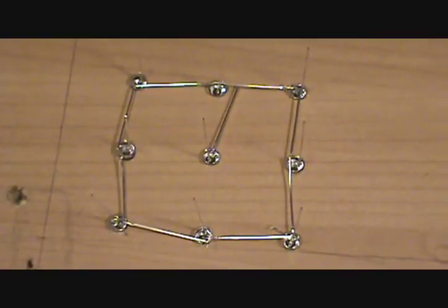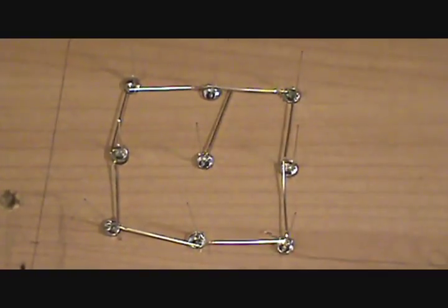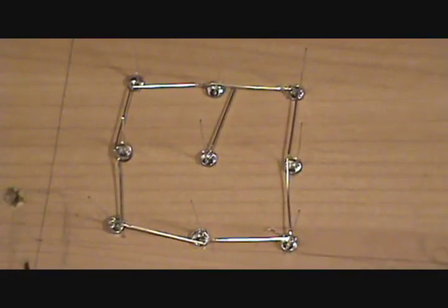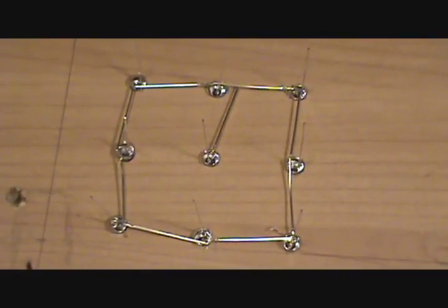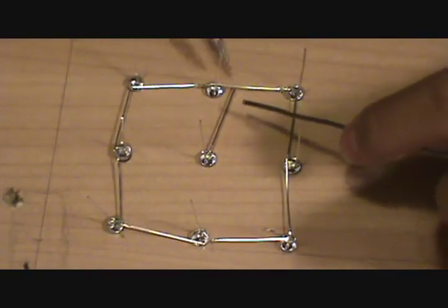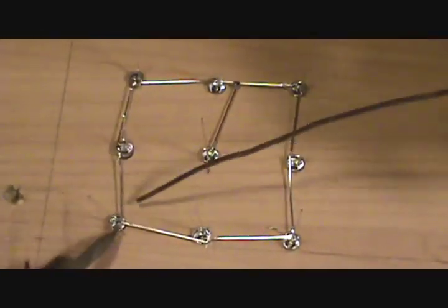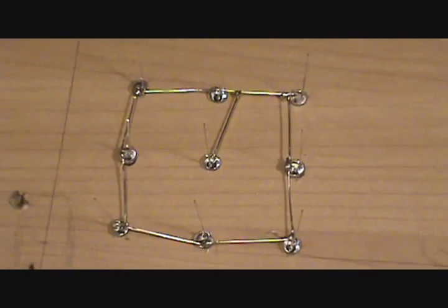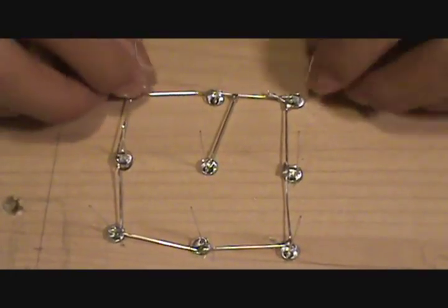Okay, now we have all the LEDs in place and all the negative leads bent down so that they're touching each other. We can start soldering them in. We've just finished making one layer of the LED cube. Now all we have to do is make two more.